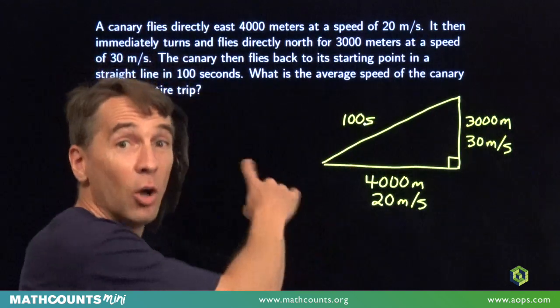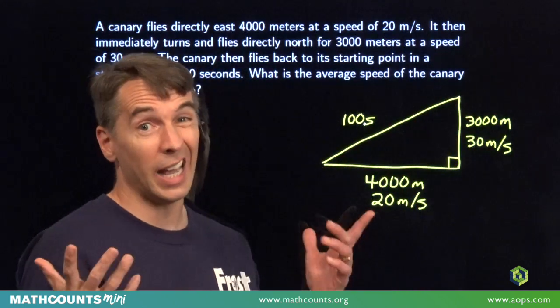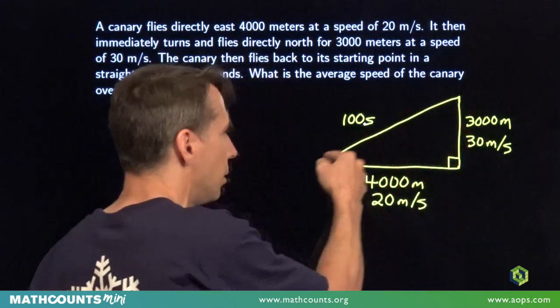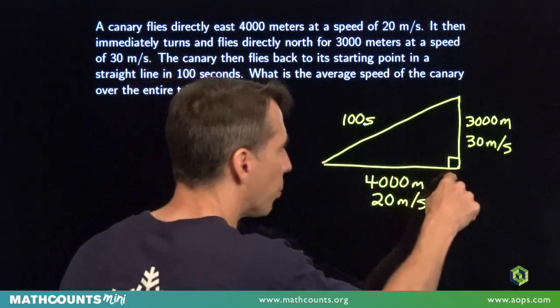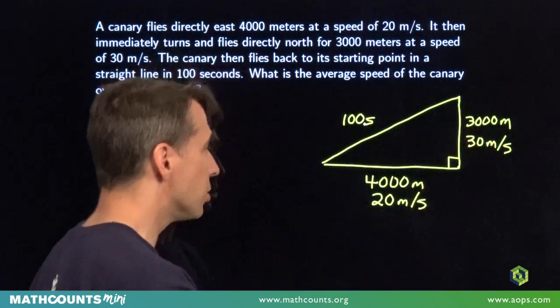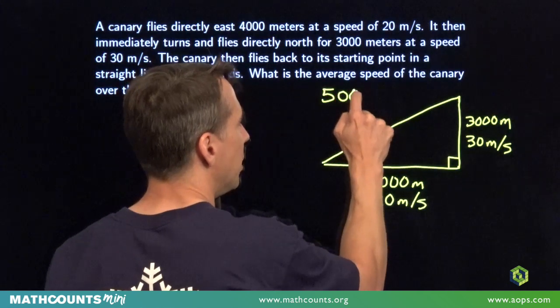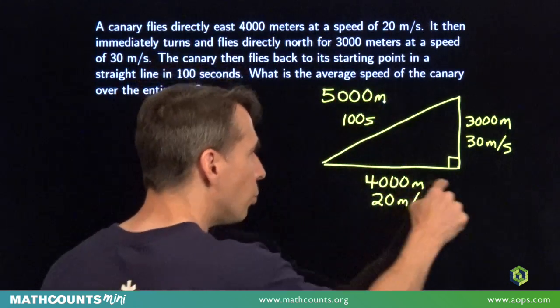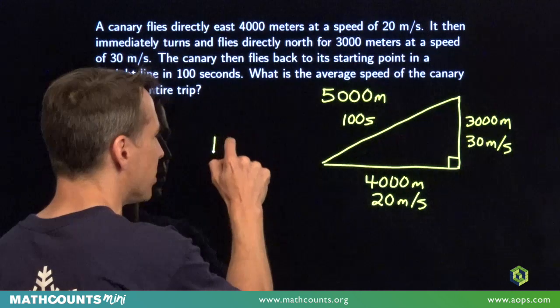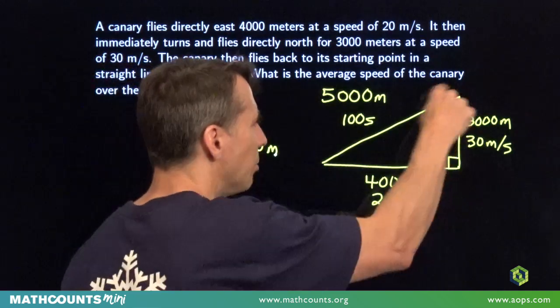Now, let's see. We need the average speed of the canary over this whole trip. So we need to figure out how far total the canary flew and how long it took. Well, we know the canary goes 4,000 meters and then 3,000 meters and then whatever that distance is. We could break out the Pythagorean theorem or we can see we got a 3, 4, 5 right triangle here. 3,000 meters, 4,000 meters as our legs. That hypotenuse is going to be 5,000 meters. So the total trip, 4,000 plus 3,000 plus 5,000, the total trip is 12,000 meters.